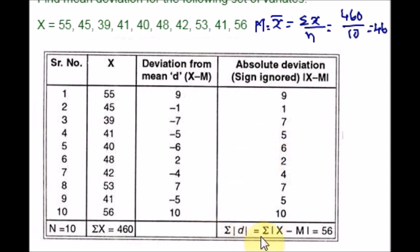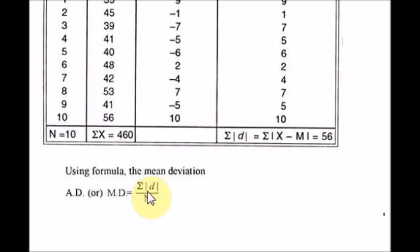Average deviation or mean deviation, both denotes the same thing. So, formula is summation of d over n or summation of x minus m over n. Just divide this by this. Let's enter the formula. Here is the formula. Just plug in the values you got from the table. So, 56 over 10 is 5.6. That is it.